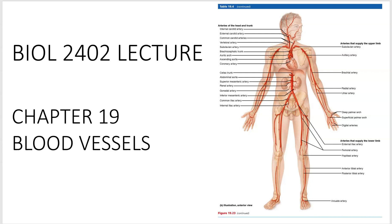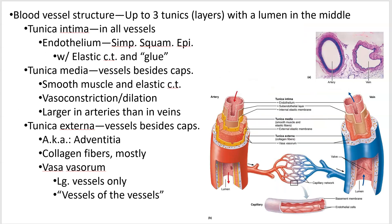So now I'm moving on to blood vessels. Let's look first at overall structure. Blood vessels have three what they call tunics — just think of them as layers.